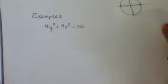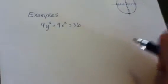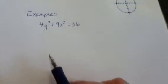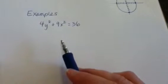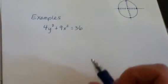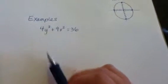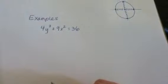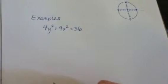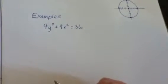Let's look at an ellipse instead. Here's an example: 4y squared plus 9x squared equals 36. Notice how the x and the y have traded places — that doesn't really mean anything or matter. We'll kind of talk about it as we go.